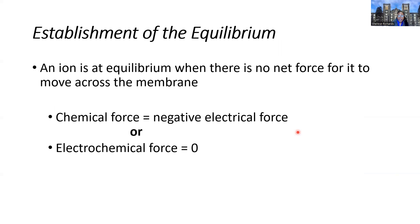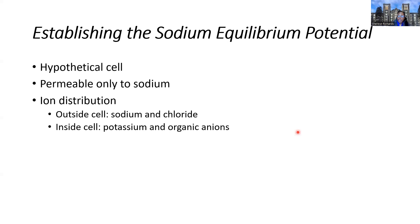When an ion is at equilibrium, there are no net forces moving it. The chemical force balances out the electrical force, and the electrochemical force — the combined forces — is zero. Therefore, the particle is not moving. That is potassium's story: that is how potassium reaches its individual equilibrium potential, which is a membrane potential of negative 94 millivolts.